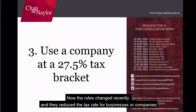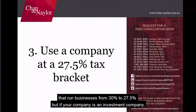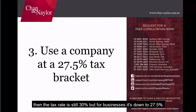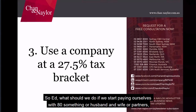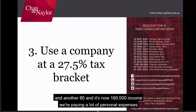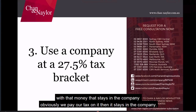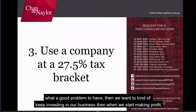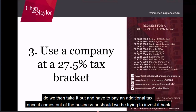The rules changed recently — they reduced the tax rate for companies that run businesses from 30% down to 27.5%. But if your company is an investment company, just investing in shares or property, the tax rate is still 30%. For businesses it's 27.5%. If you're drawing $80,000 each for yourself and your partner — $160,000 total — and money keeps piling up in the company, a key question is whether to take it out and pay additional personal tax, or reinvest it back into the business or into assets within the company.